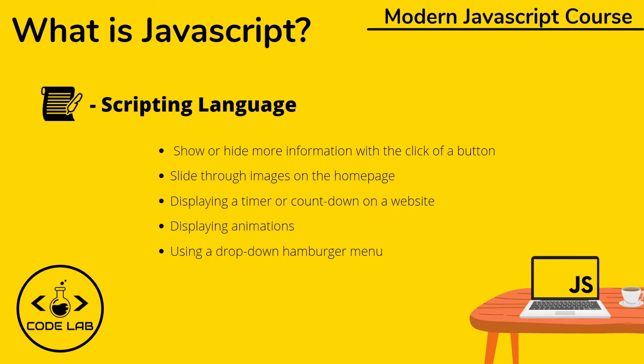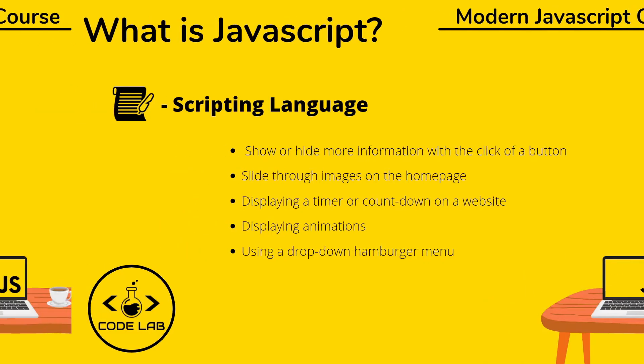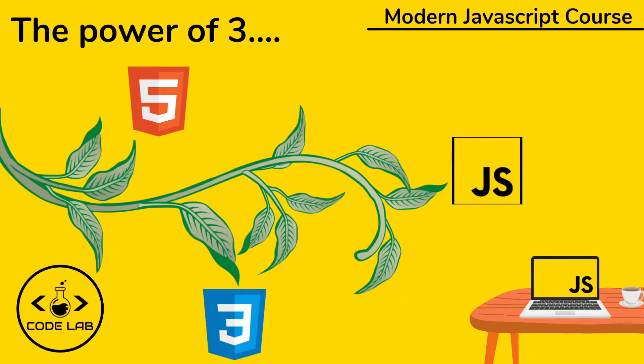Some of the things you can see on screen now: sliding through images on the home page, displaying a timer, displaying animations, drop-down menus — these are all examples of what JavaScript can do. And some other examples you see every day but don't actually notice: like when you're on Twitter and the timeline automatically updates, or when Google suggests search terms based on a few letters you start typing, or giving a video a blue thumbs up. In all these cases, that's JavaScript in action.